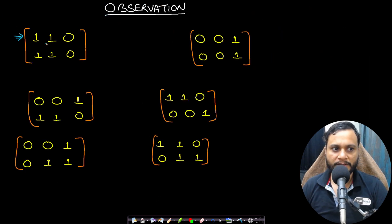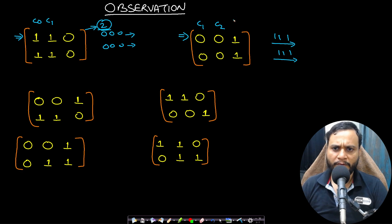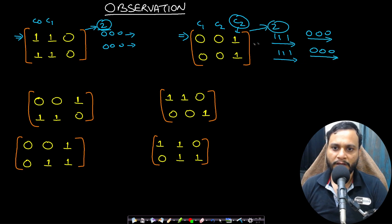Now let's look at observations to build an optimal solution. In the first example we can flip column 0 and column 1 to make two rows of all zeros — both are equal rows, so the answer is 2. In the second example, flipping columns 1 and 2 makes the first row all ones and the second row all ones as well. Alternatively, flipping column 2 gives all zeros in both rows. The answer is again 2.